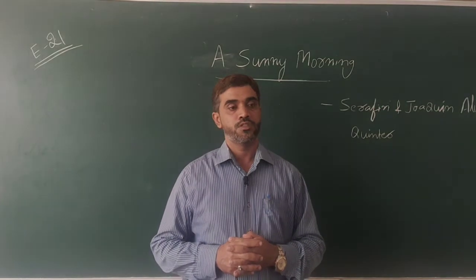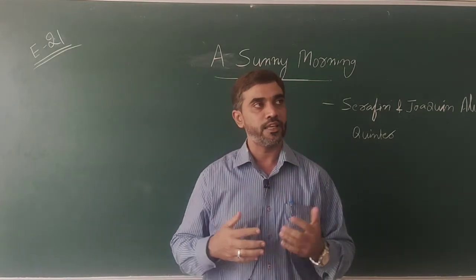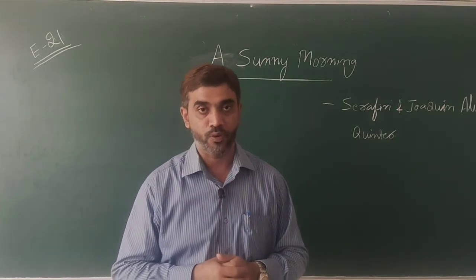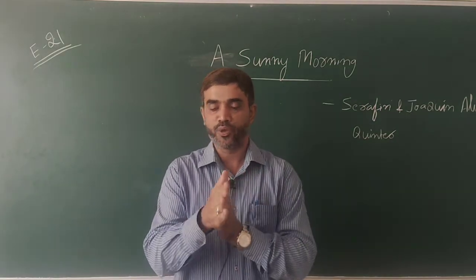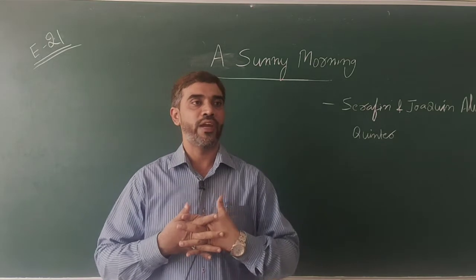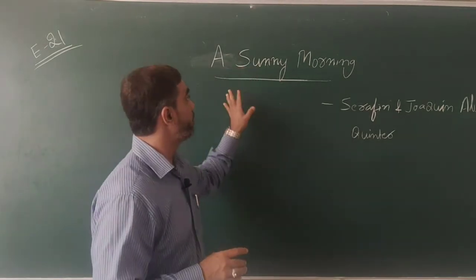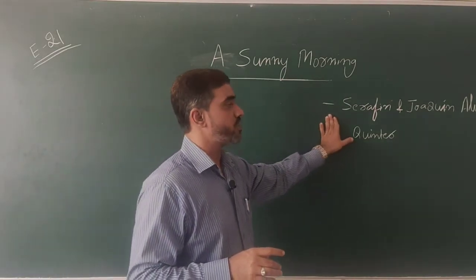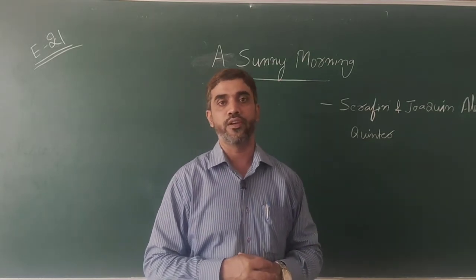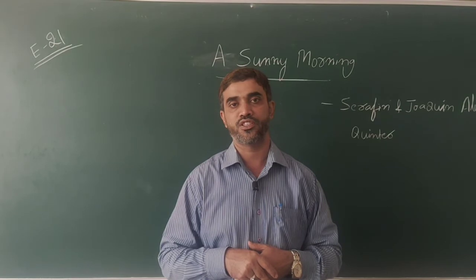Good morning everyone. Today is class number 21 and we are going to move on to something very impressive - the fifth unit from your textbook. So far we have discussed Romeo and Juliet, then two deer, then a poem on children, and then an essay on environmentalism. Today let us talk about the title called 'A Sunny Morning.' The moment I say play, you know it has a theme, a story, and everything is in terms of the composition between the characters.